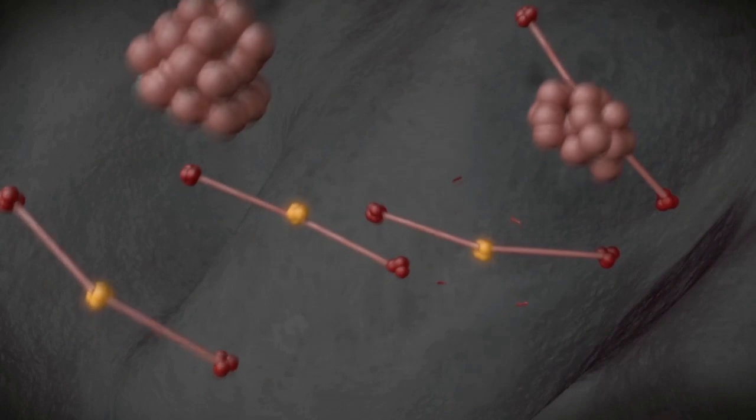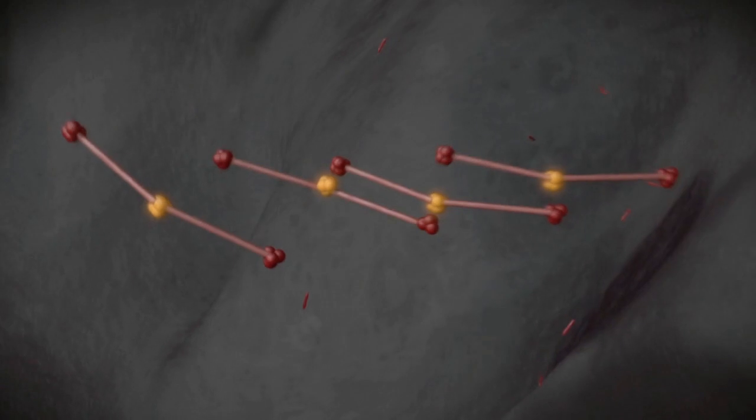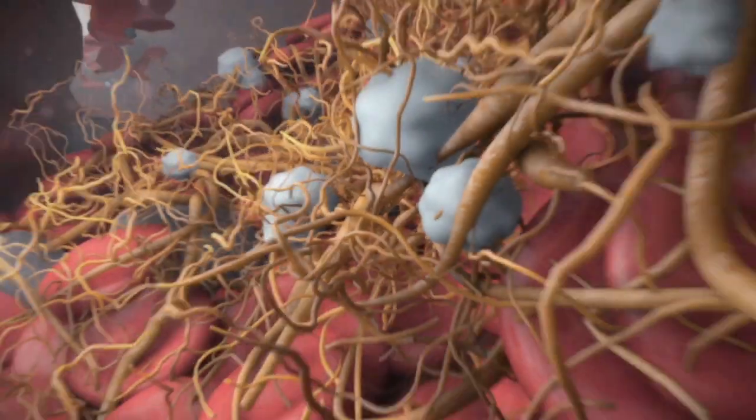Two resulting fibrin monomers then join together, forming a fibrin dimer. Fibrin dimers assemble into multimers, which results in long branched fibrin threads that trap white and red blood cells.